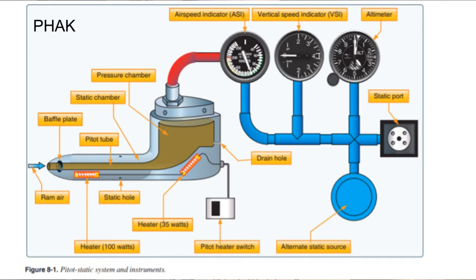As the aircraft climbs, the decreasing static air pressure registers on the VSI and altimeter as a climb. Now these instruments can become inoperative if parts of the system become blocked. If the static port becomes blocked, all three would be rendered inoperative. However, if the pitot tube becomes blocked, only the airspeed indicator would be inoperative. If you pick up ice in flight, that would be a case of how the pitot tube could become blocked.